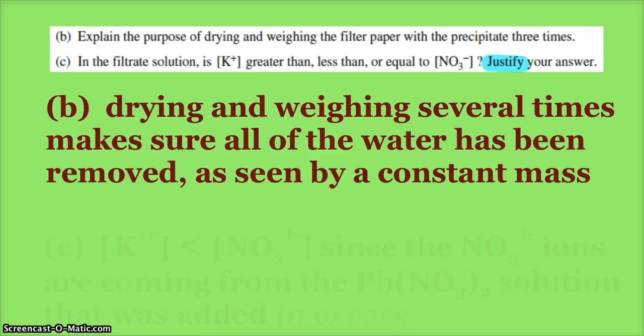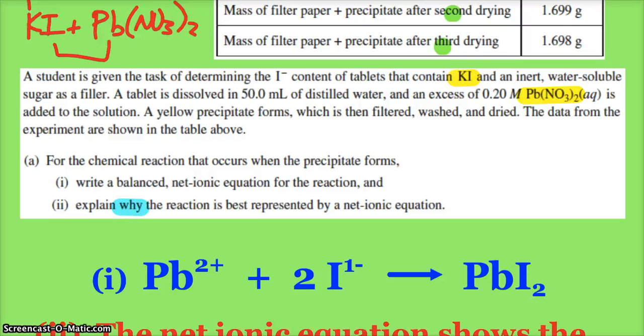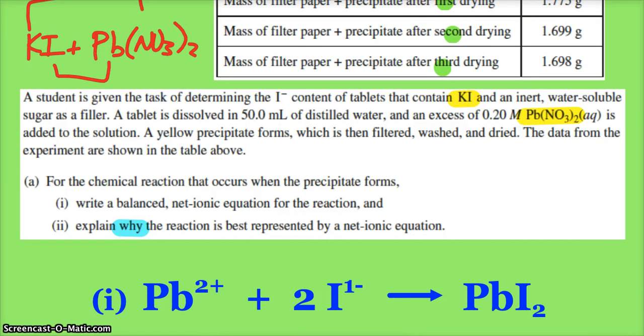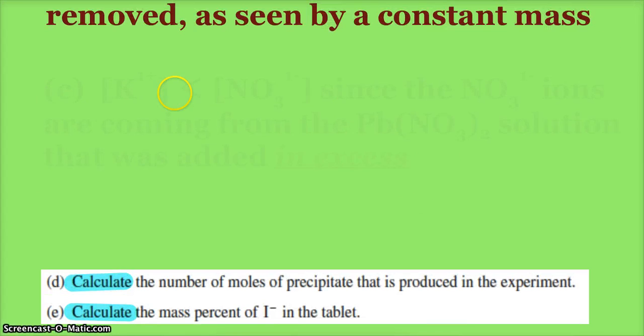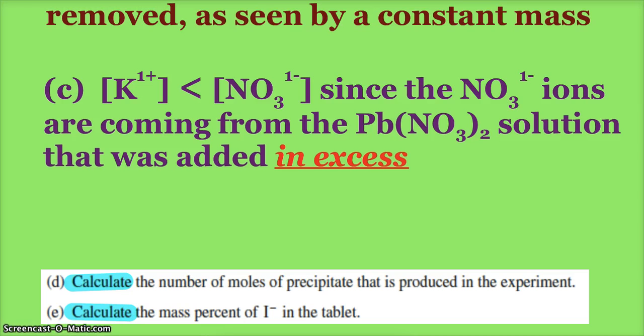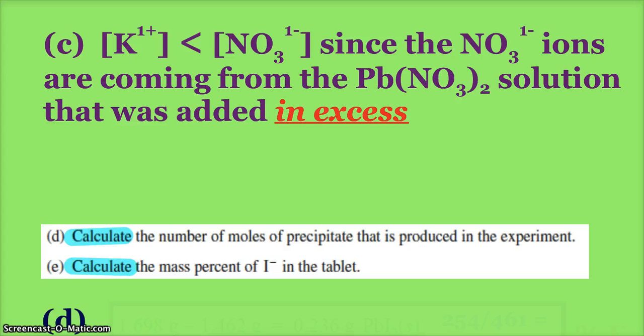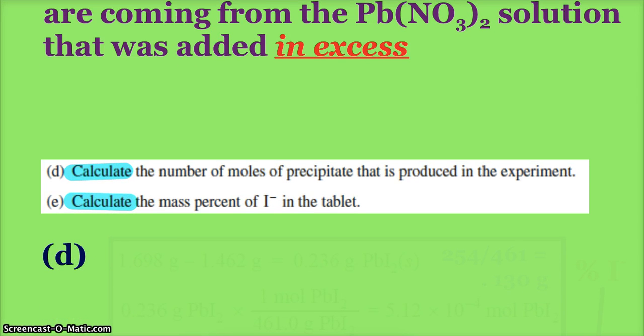Part C: in the filtrate solution, is the concentration of potassium ion greater than, less than, or equal to the nitrate ion? Justify your answer. Well, potassium and nitrate are both spectators, so there must be a hint somewhere in our information as to why we should know this. The hint up here is our lovely friend the word 'excess.' There's an excess of the lead(II) nitrate that is added. Since we know there's an excess of the Pb(NO₃)₂, we know that there should be more nitrate than potassium. Once you see a question like that, there's got to be a reason they expect me to know this—and that was the reason, that lovely 'excess.'